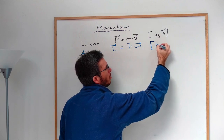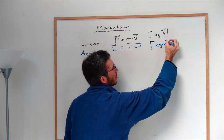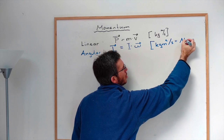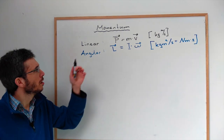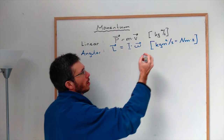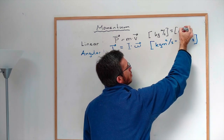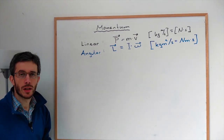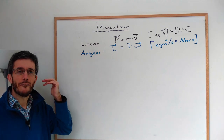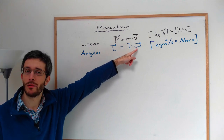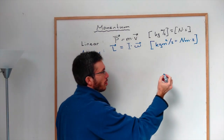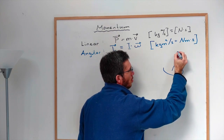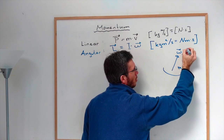The unit of angular momentum is kilograms times square meters per second, or equivalently newton meters times seconds. Angular momentum is a vector — it points in the same direction as angular velocity ω. So if you have an object that turns, your vectors ω and L both point in the same direction, which we determine using the right-hand rule.